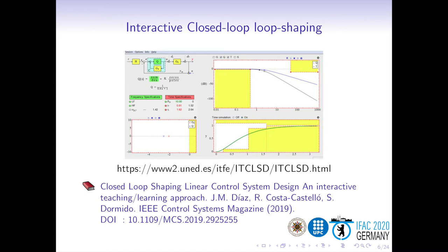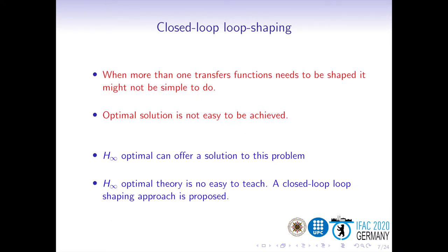In our previous works, we exploited these concepts in an interactive tool which allows performing closed-loop shaping completely interactively. This tool is available for free at the indicated web page. Manual closed-loop shaping can be easy when only one transfer function is involved, but with more transfer functions it may not be so easy, and the solution obtained may not be optimal. H-infinity optimal control can offer a solution to this, though introducing H-infinity theory to students might not be easy. To overcome this, a graphical and interactive methodology has been developed.